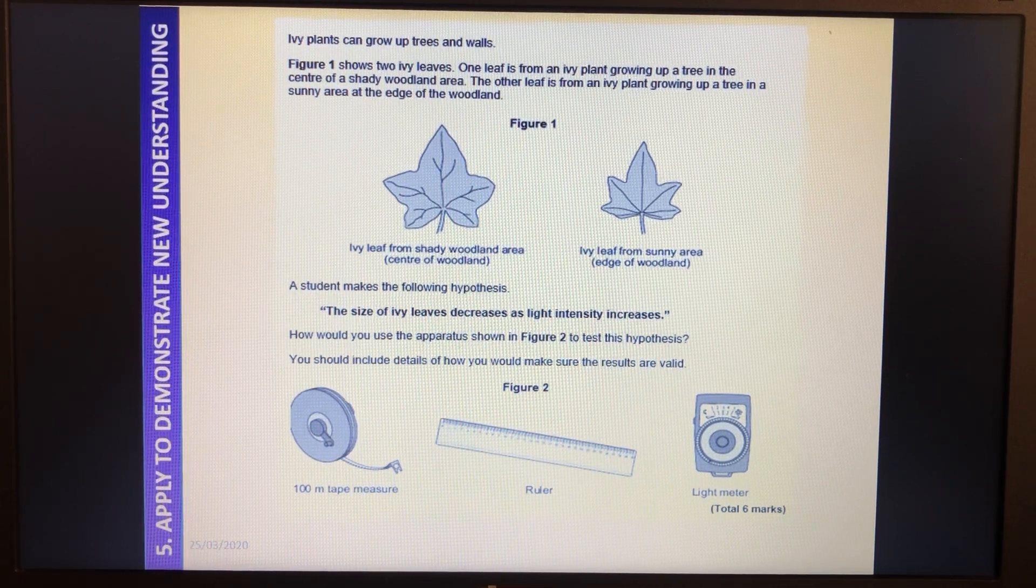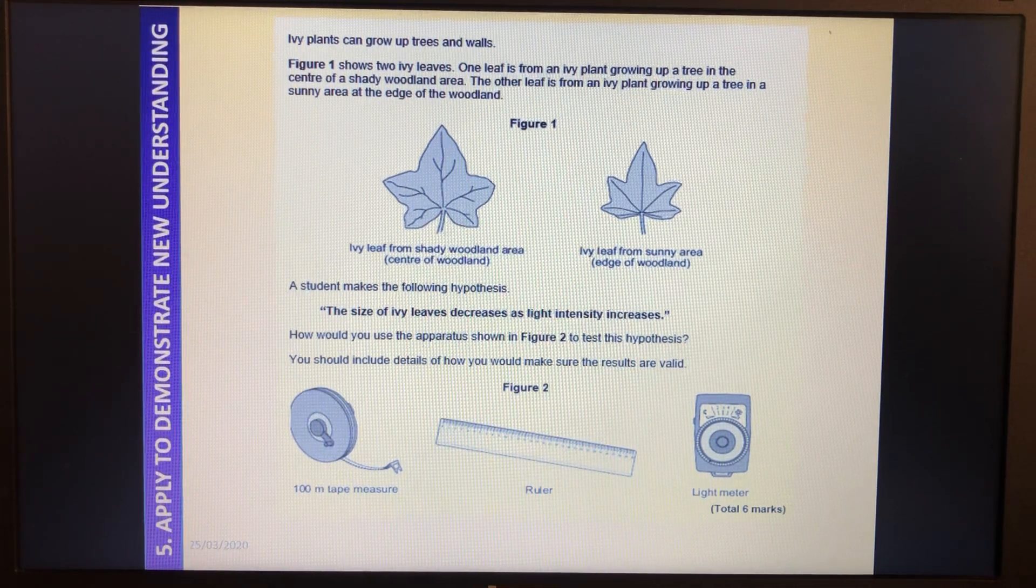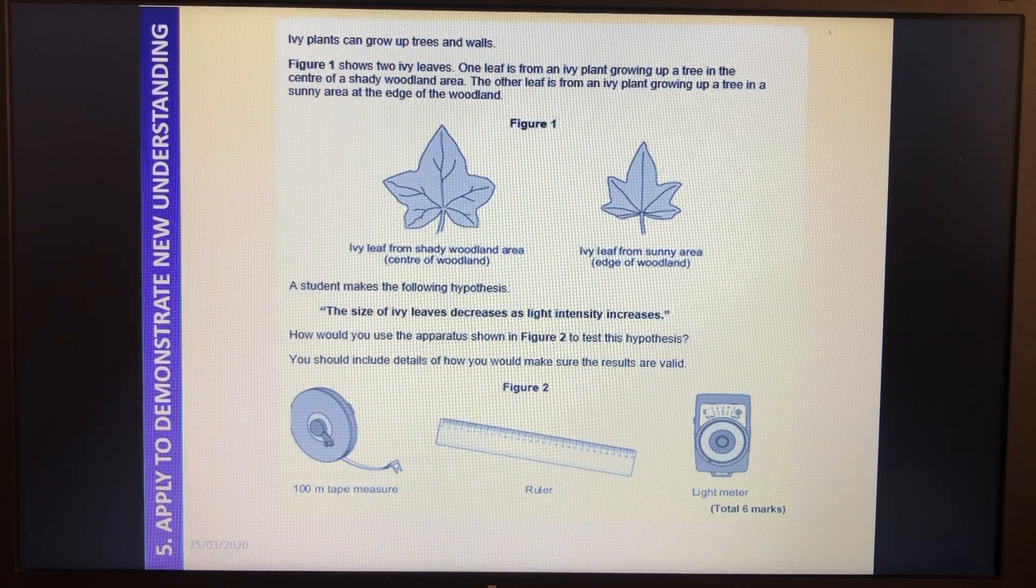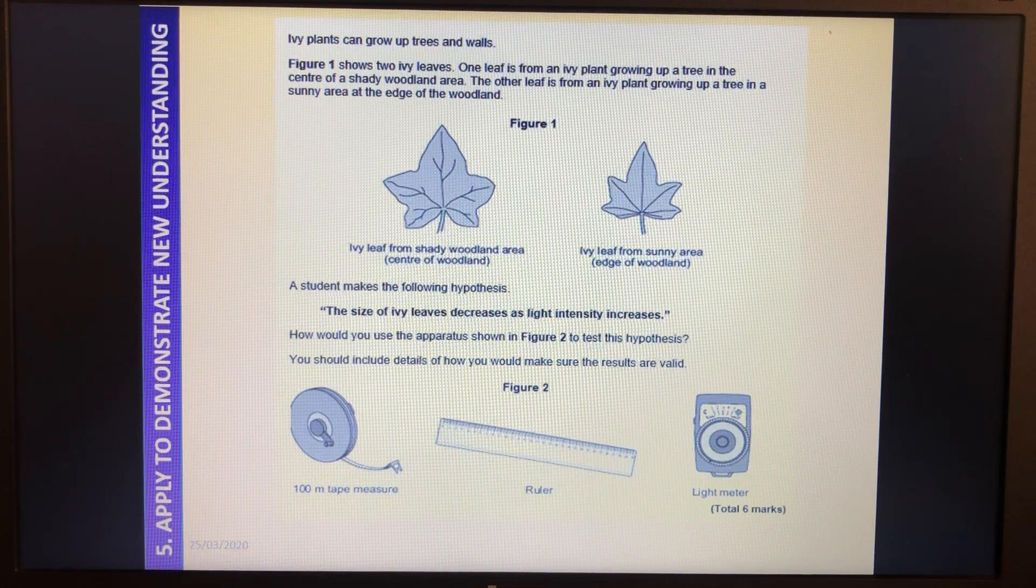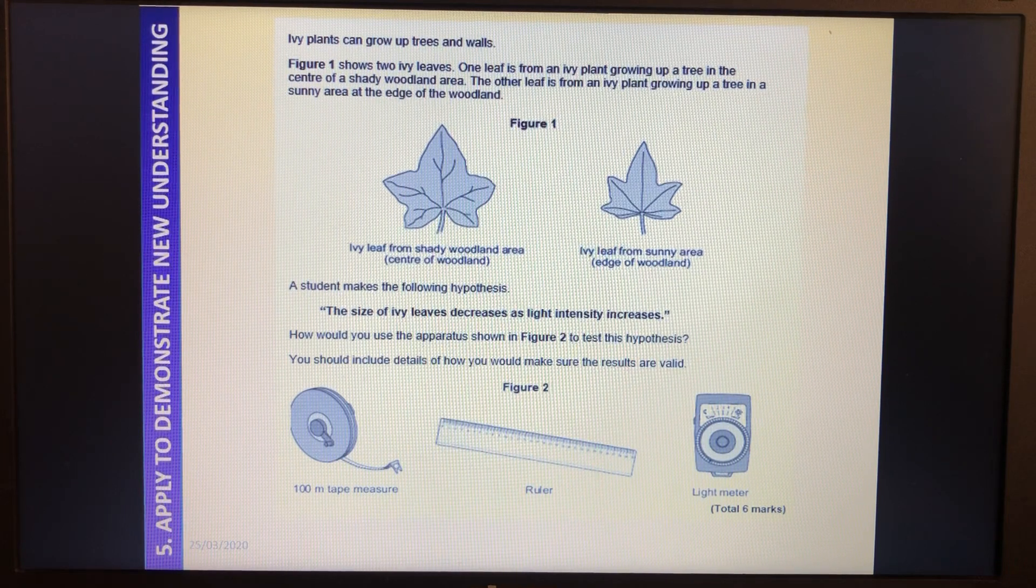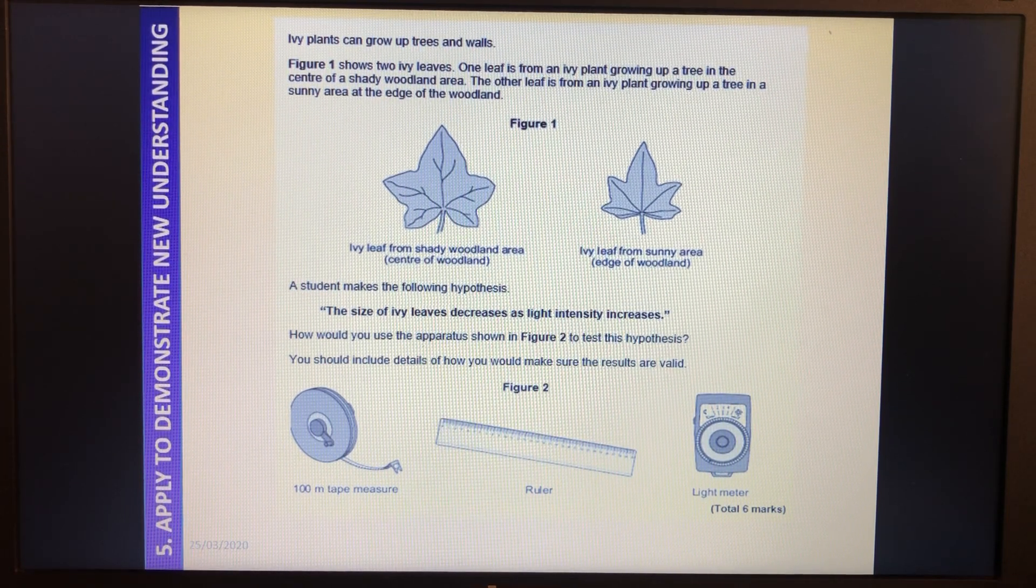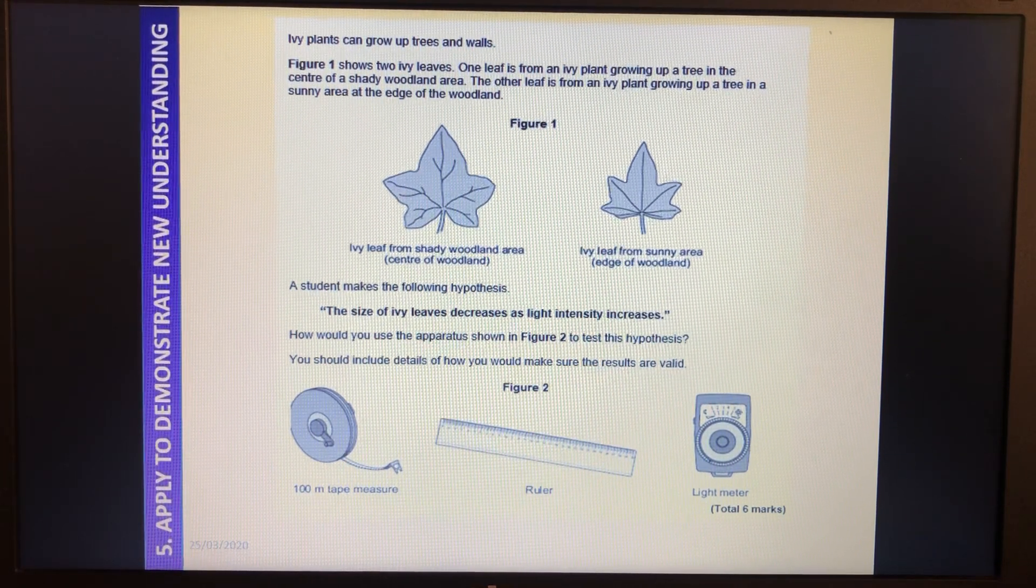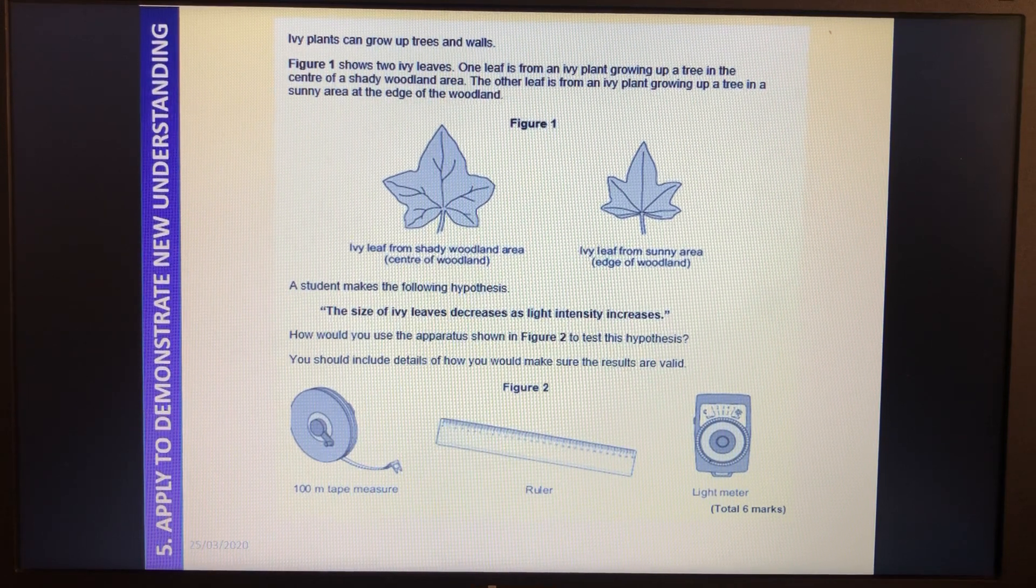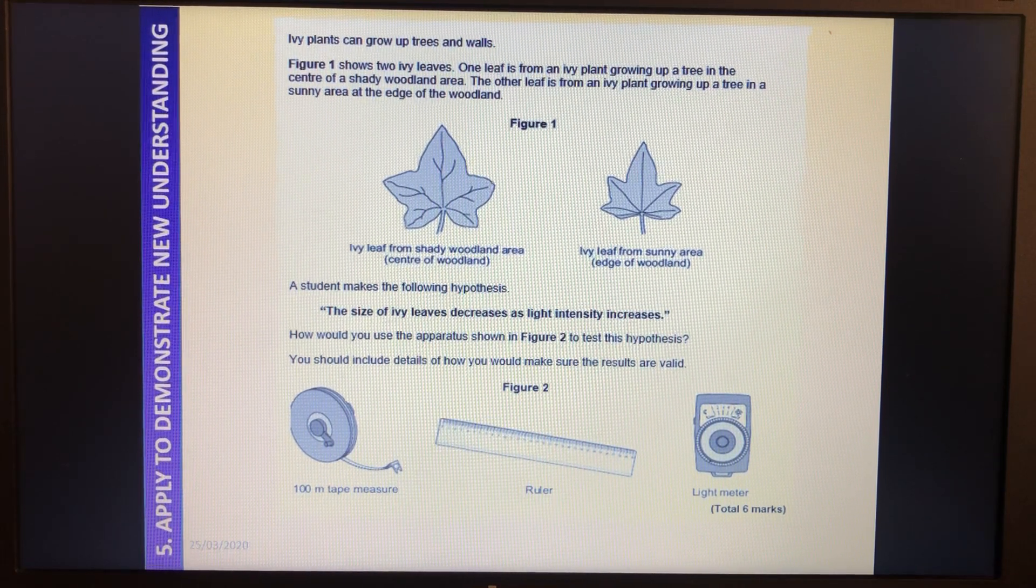Now, light intensity varies across the whole day. So something you're going to have to consider in this for your control variables is when are we doing this? We don't want to start the investigation in the morning, then do a bit around lunchtime and then do a bit in the evening. We want to do it all at the same time so that light intensity is as controlled as possible.